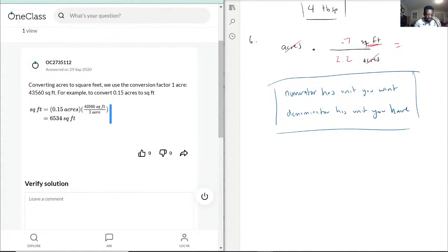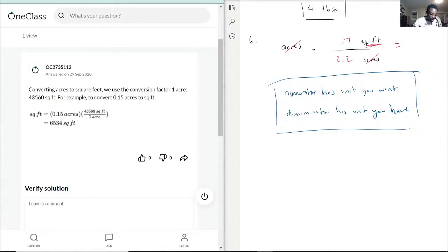If you can see my pen hover over it, this right here is the golden thing—see how they have square foot in the numerator and acre in the denominator? This is how you're going to do it.